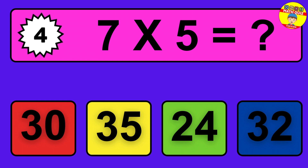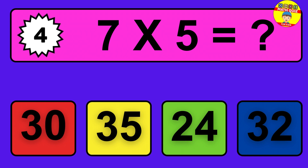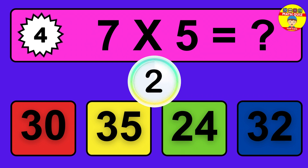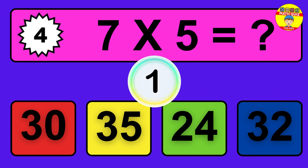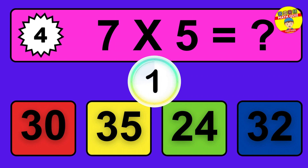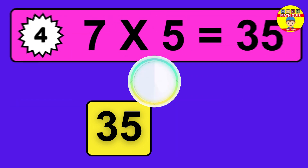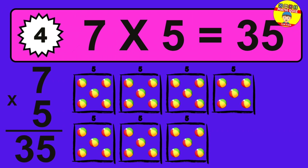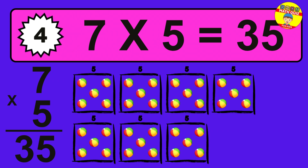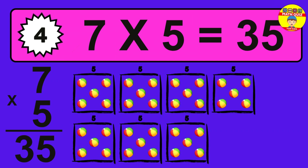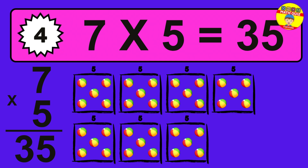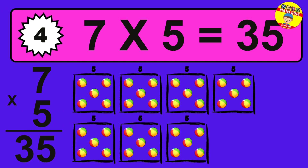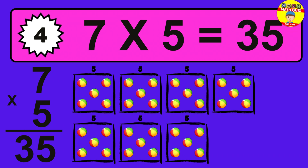Question 4. 7 times 5 equals what? The answer is 7 times 5 is 35. So how many balls do we have? 35 balls.